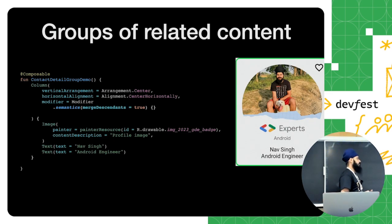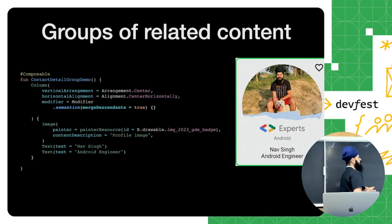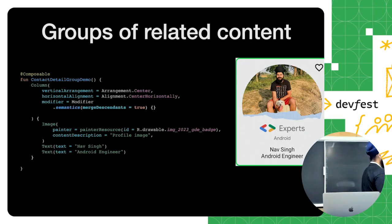In XML, we set `focusable` to true or `screenReaderFocusable` to true on the parent layout to group sub-components — same terminology is used in Compose. Here I've developed a simple UI with three components: an image view and two text components. I want the system to process all of them as a single component, so I set `semantics` on the Column with `mergeDescendants = true`. Now the system processes this component and speaks all together: 'profile image, Nav Singh, Android engineer.'